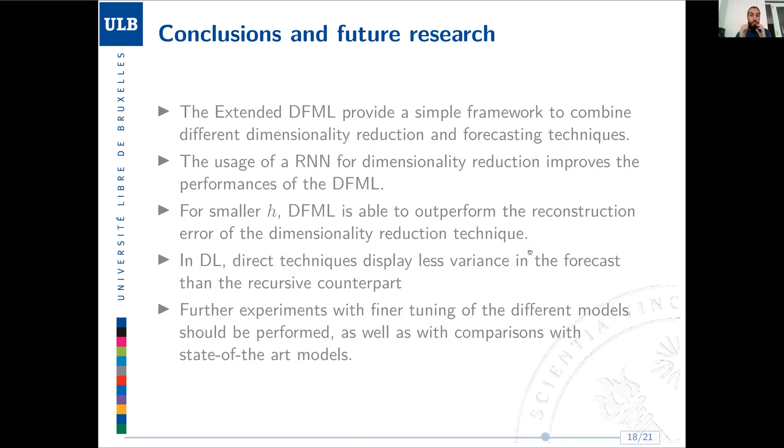To summarize, the extended DFML is a simple framework that allows you to combine statistical and machine learning based techniques for both dimensionality reduction and forecasting. As I said before, RNN for dimensionality reduction improves the performances of DFML over statistical techniques. For smaller horizons, DFML is able to outperform the dimensionality reduction technique while doing forecasting. And if we focus on deep learning, usually direct techniques are displaying less variance than the recursive counterparts. Of course, what I should have mentioned also is that this is a preliminary experiment. What I should do also is fine tuning of the different model parameters, as well as comparing this technique also with global state-of-the-art models like DeepAR.